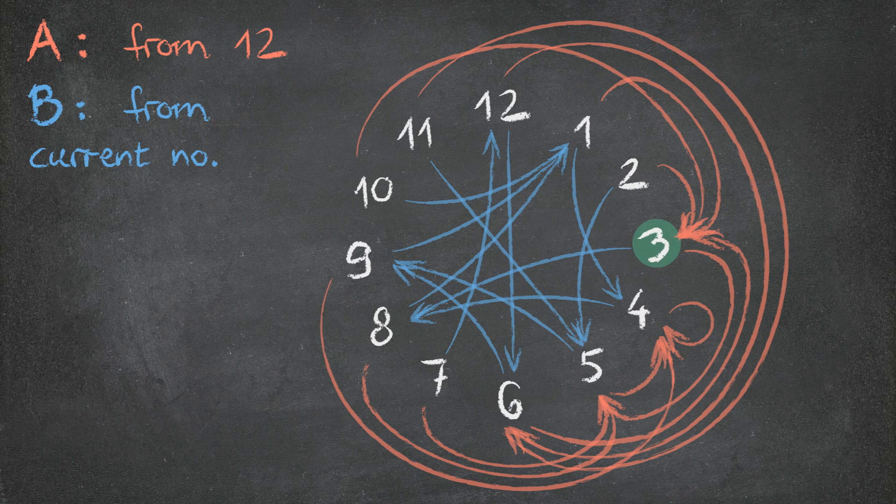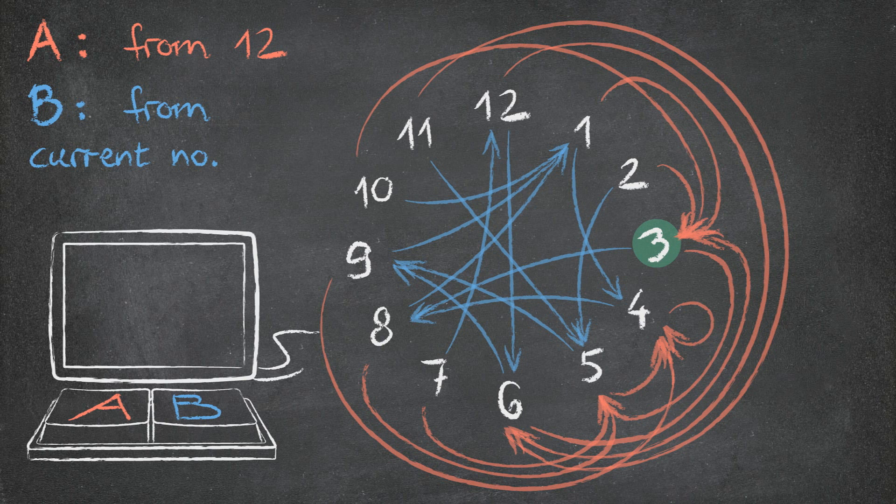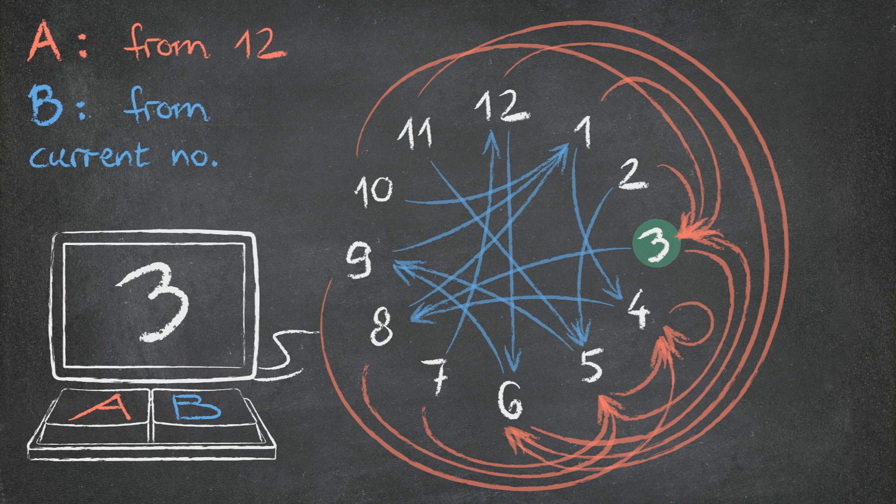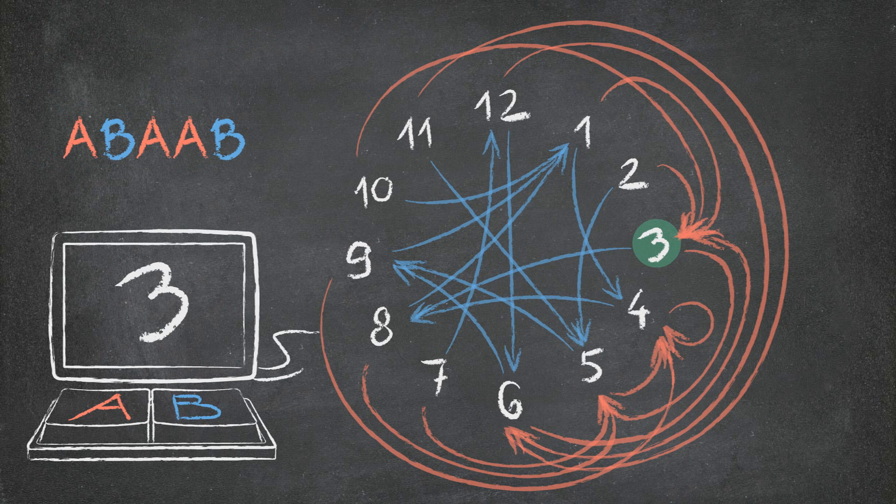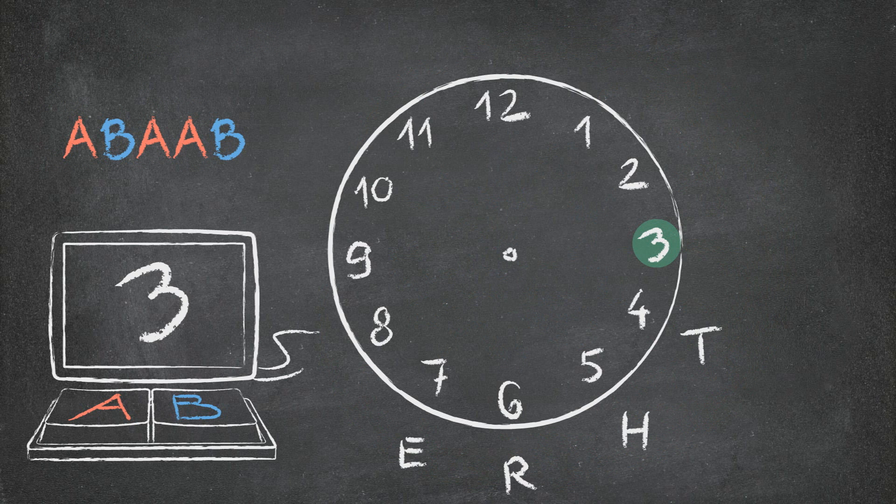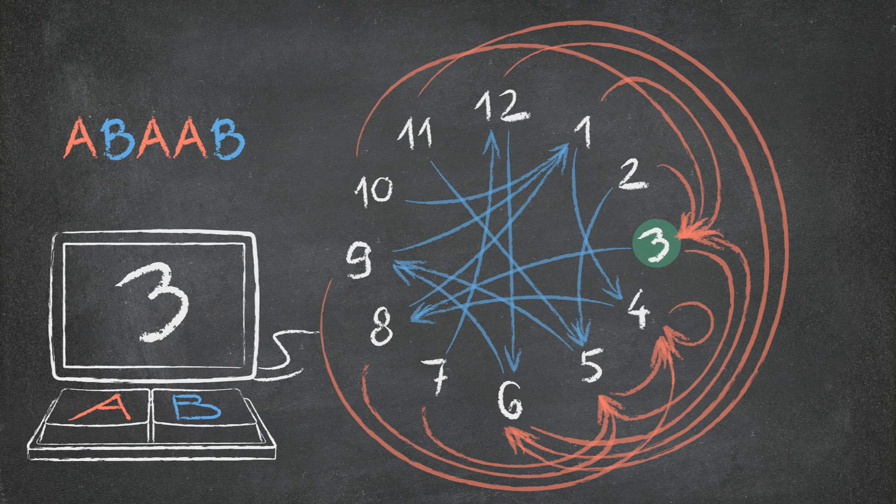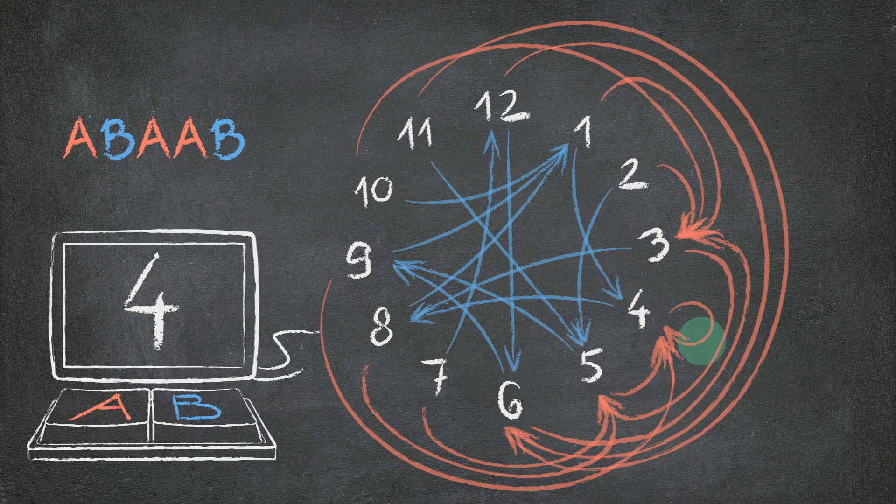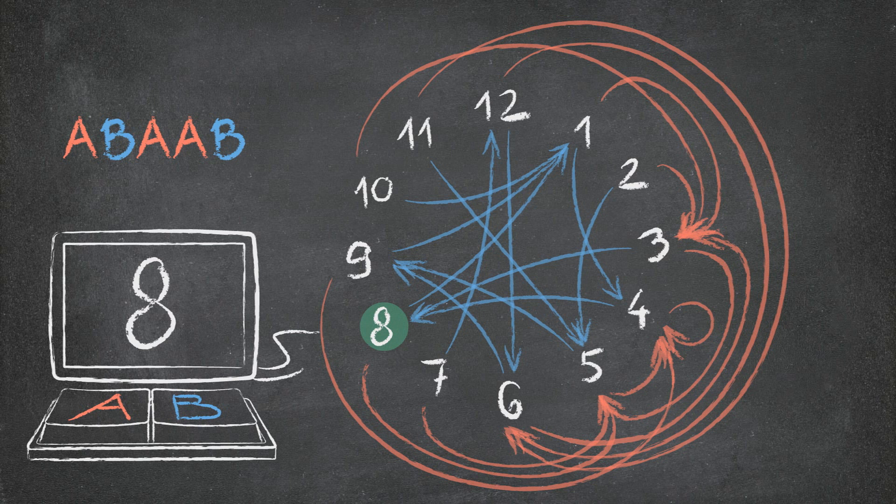The technical term for a diagram of states and transitions is automaton, and the reason they're called that is because you can think of them as computational devices, and they come up in computer science. If you specify a given number on the clock, then this diagram can compute the number you get after a series of instructions. For instance, if you were curious what number you'd get if you started from 3 and performed the instructions A, B, A, A, B respectively, you no longer have to look at the clock and count out letters. You can just traverse the path in the diagram encoding the transitions A, B, A, A, B, and see that this results in 8. So this diagram automates that computation for you.